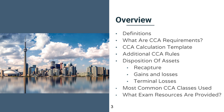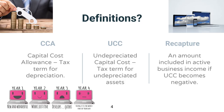Don't worry if you think you're going to get confused, as when we get to the disposition of assets, I'm going to go through an example of how CCA, recapture, and terminal losses work. CCA stands for capital cost allowance, which is essentially the tax term for depreciation. UCC stands for undepreciated capital cost, which is the tax term for undepreciated assets — in other words, what's still left over that you can depreciate.